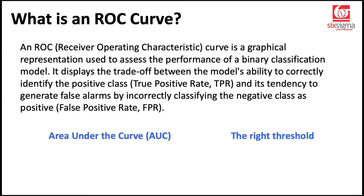Two important takeaways from the ROC curve are a model performance metric known as the area under the curve, and most importantly, the right threshold. A model generally predicts the probability, which is then converted to a class using this threshold. The ROC curve helps us determine the right threshold for a given model.